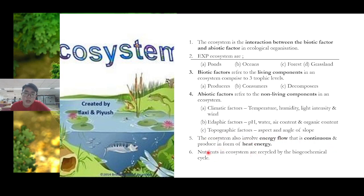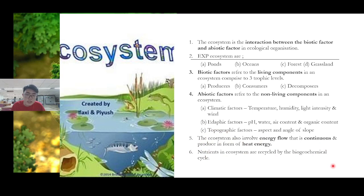The ecosystem also involves energy flow, which is continuous and produced in the form of heat energy. Nutrients in the ecosystem are recycled by the biogeochemical cycle. Energy flow is similar to the food chain, which you are familiar with, and biogeochemical cycles will be explained in more detail in further topics.